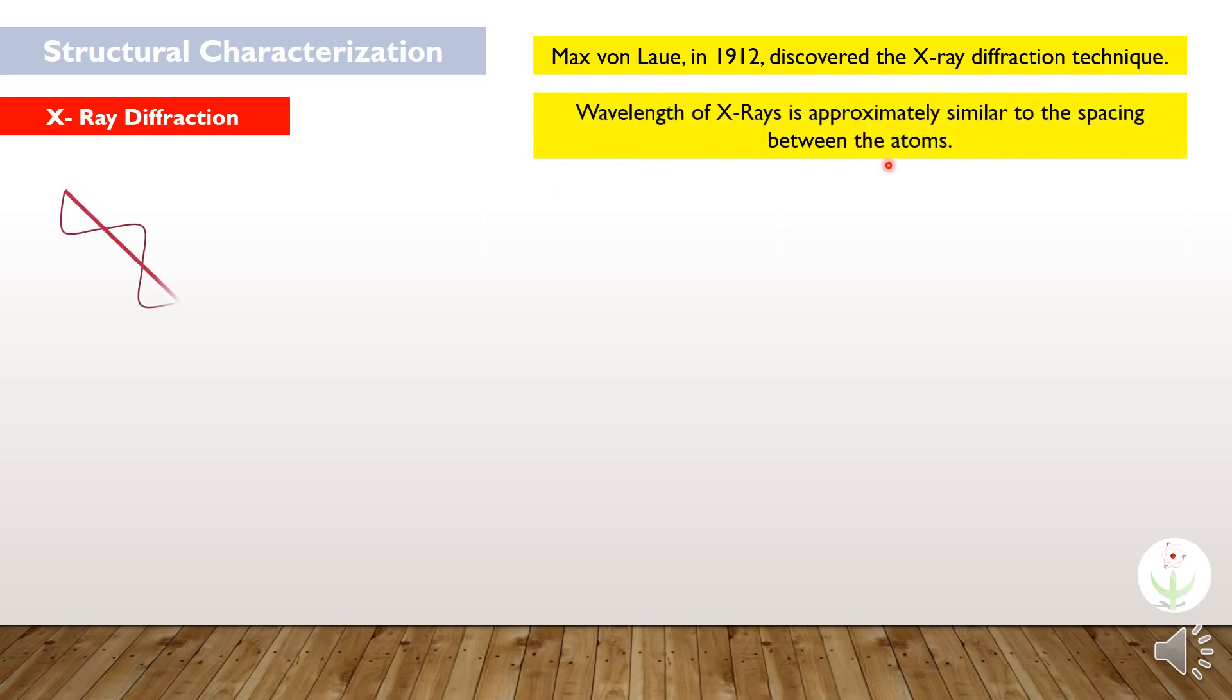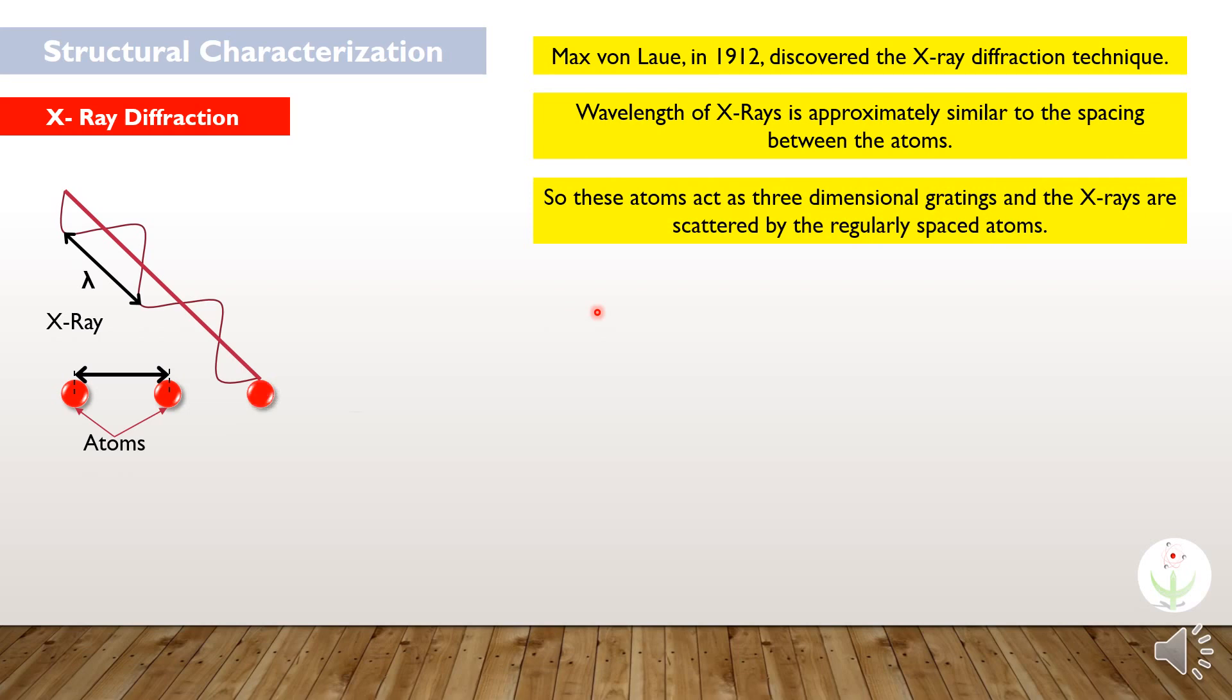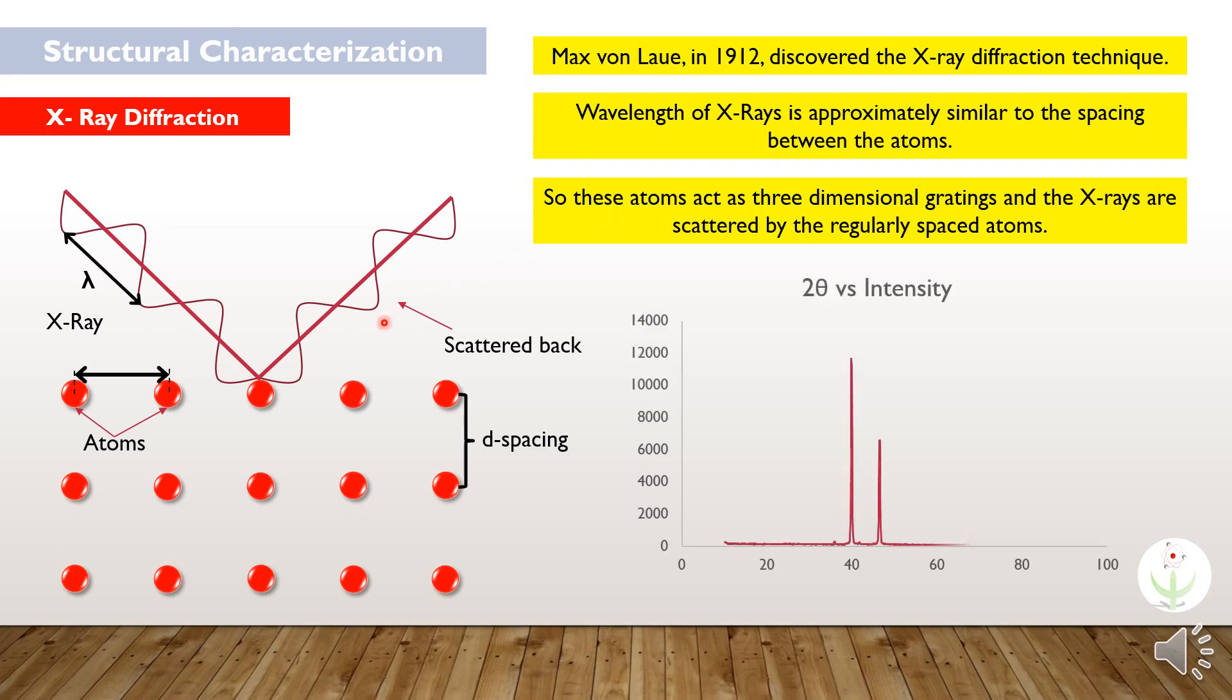To analyze how the atoms are arranged inside the grain, Max von Laue in 1912 discovered the X-ray diffraction technique. He believed that the wavelength of X-rays is approximately similar to the spacing between the atoms. So, these atoms can act as three-dimensional gratings and the X-rays are scattered by the regularly spaced atoms. That is why the intensity of the diffracted rays is plotted against two times the incident angle.